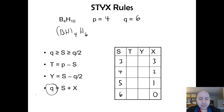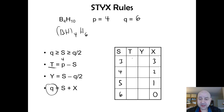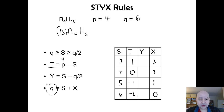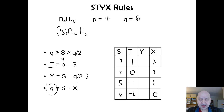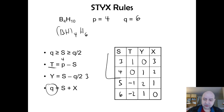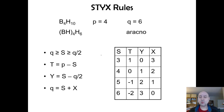For T (triple bridges): P minus S gives 4−3=1, 4−4=0, then −1 and −2 — so two valid positive rows. For Y (boron-boron bonds): S minus Q/2 gives 3−3=0, 4−3=1, 5−3=2, 6−3=3. The two valid possibilities are: (1) S=3, T=1, Y=0, X=3 and (2) S=4, T=0, Y=1, X=2.